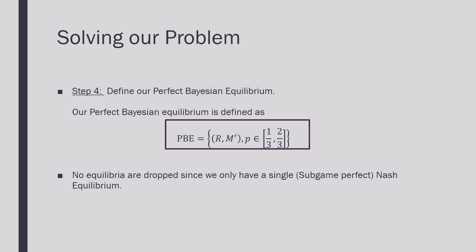Lastly, we're going to formally define our Perfect Bayesian Equilibrium. Our Perfect Bayesian Equilibrium is going to be where Player 1 is playing right and Player 2 is playing M, with our beliefs p being between 1 third and 2 over 3.